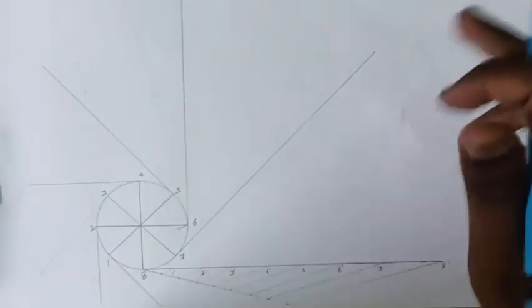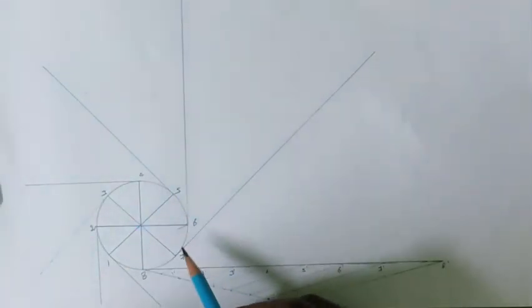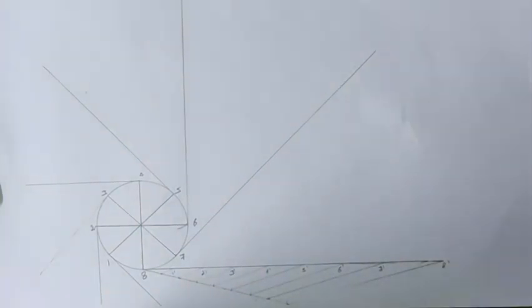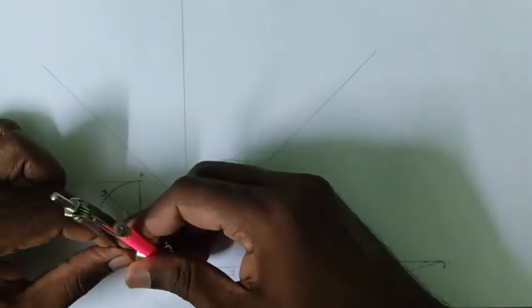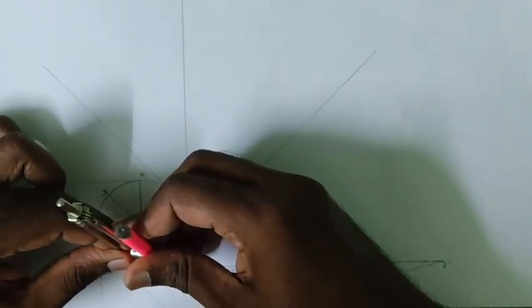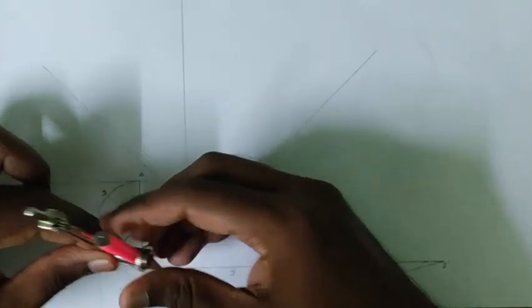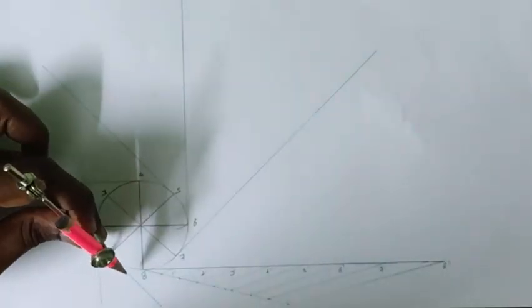Now I have drawn perpendicular lines from all the points. And take your compass and measure the distance between this base point and 1 and cut an arc from 1 to that point.